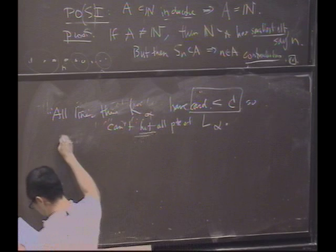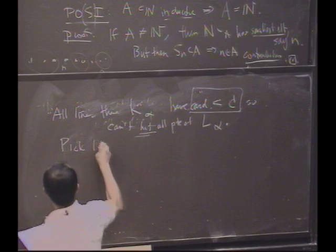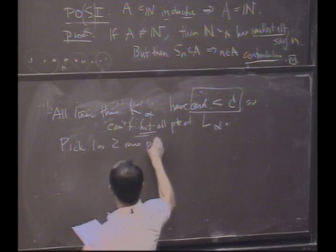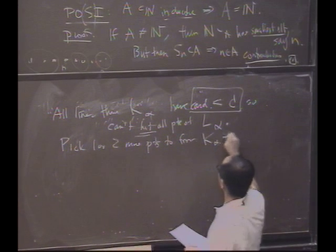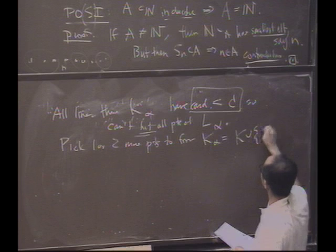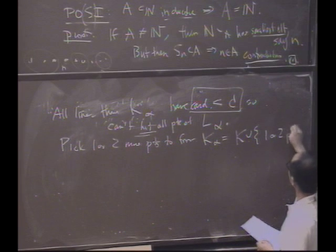So if you don't hit all the points, well, I'll just pick one or two more points as needed to form K_alpha, which is going to be K union one or two extra points.